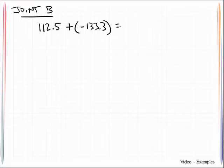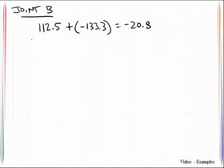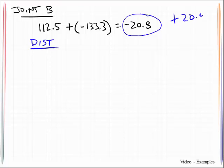What we'll do is we will sum up the moments that are present at joint B. And we will find out that that works out to be negative 20.8. Now that we have that, we can go ahead and distribute that moment. Because we know that in order to get this to balance out, we're going to have to add on 20.8 kip feet to that particular joint.